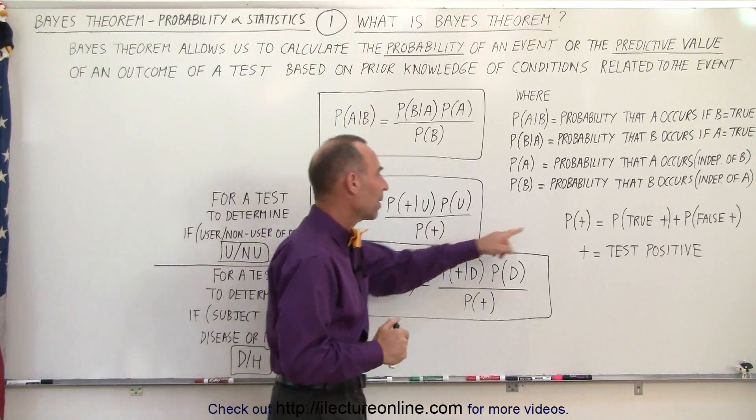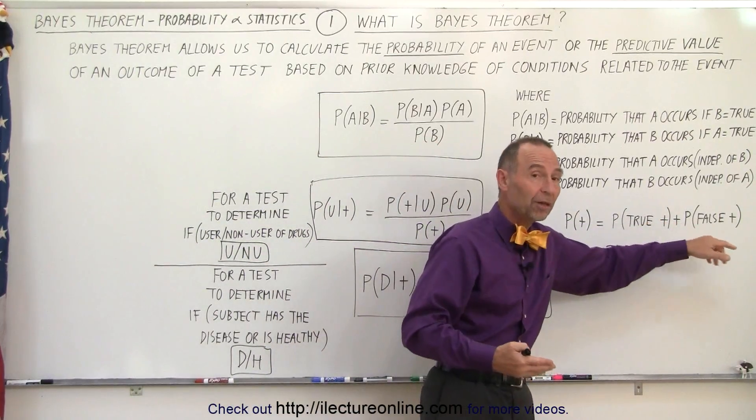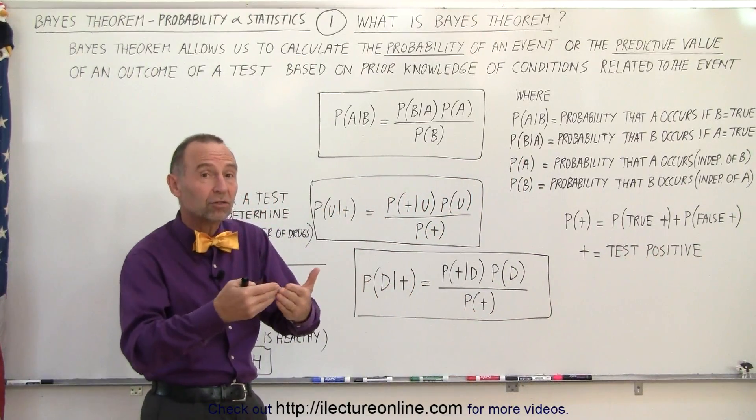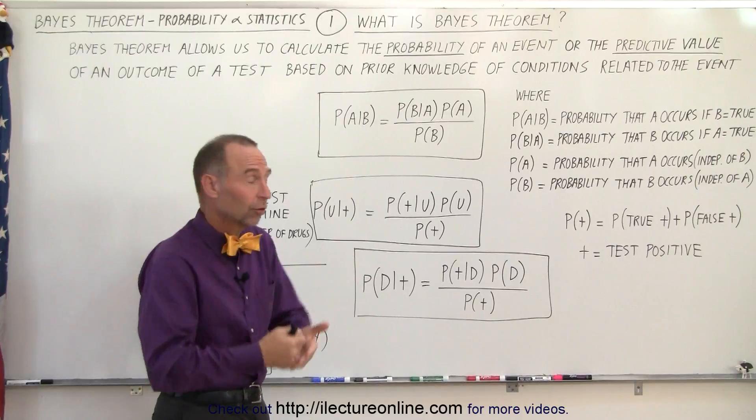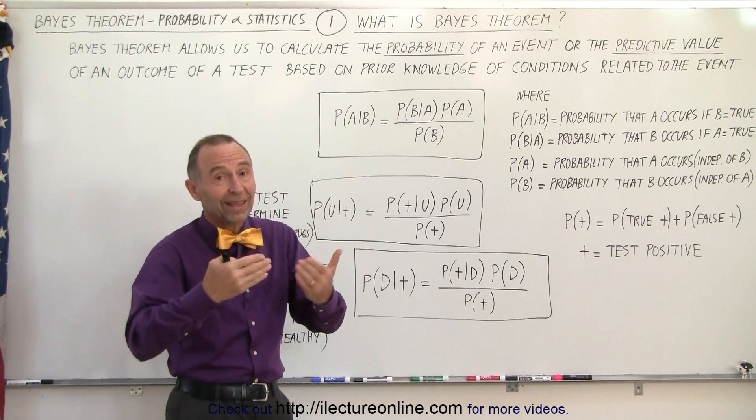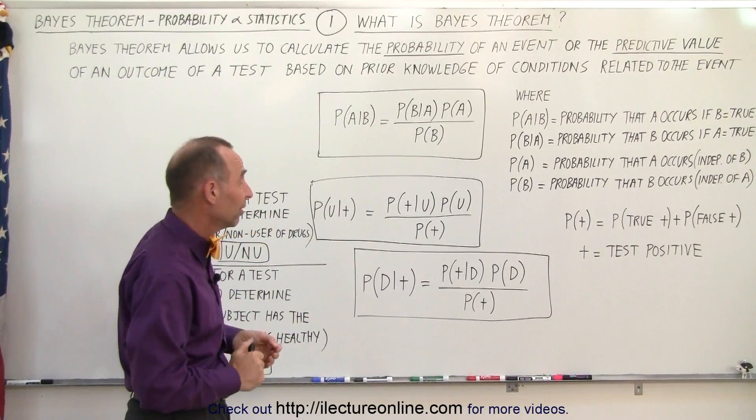And keep in mind that if the test came out positive it means that it could be a true positive or a false positive. Meaning a true positive means that the person actually uses drugs and was tested to be a user of drugs, or the person doesn't use drugs but the test indicated that the person did use drugs. That's what we call a false positive.